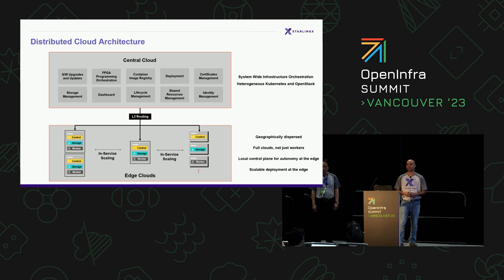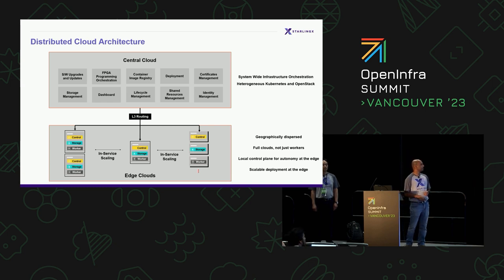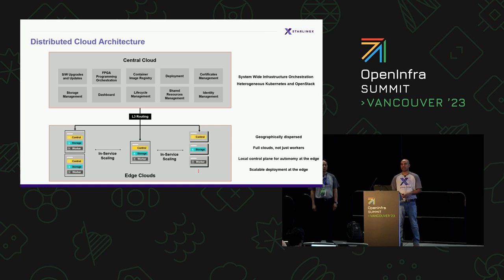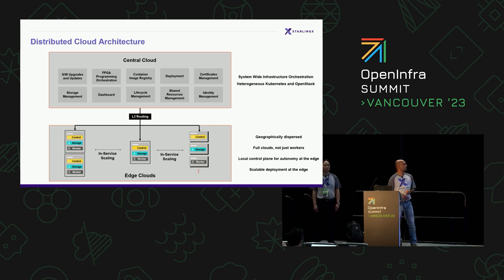Once you have visibility, the next set of activities is lifecycle management — software updates, system upgrades, and firmware orchestration — all centrally managed from the central cloud. The central cloud has the intelligence to know which subcloud it's talking to, what operation is being executed, and monitor status of all operations, providing feedback to the user. For deploying containerized applications on edge clouds, a centralized container image registry serves as the location where all images are stored and subclouds pull images from.